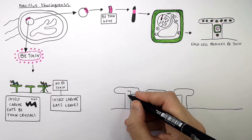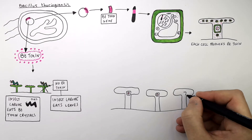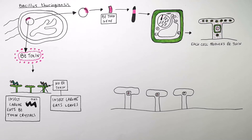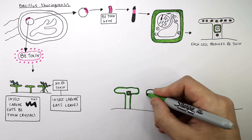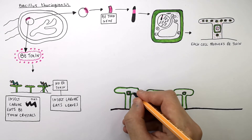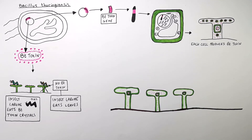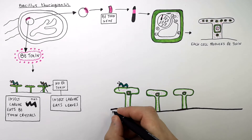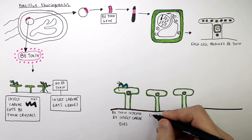The two plants to the left are Bt crops — genetically engineered plants with the Bt gene in the plant's genome. Whereas the plant on the right is a normal native crop which has not been genetically engineered and does not have the Bt gene in its genome. The two Bt plants will produce the Bt Toxin, so if insect larvae feed on these plants, the Bt Toxin is ingested by the insect larvae and it dies. The crops are not eaten.